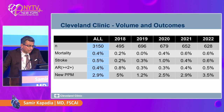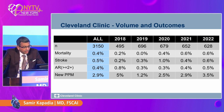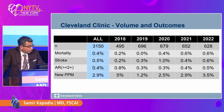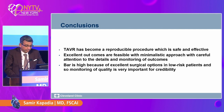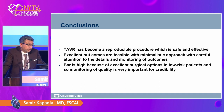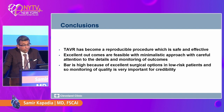These are our data for the last four years — 3,000 patients. Mortality is 0.4%, stroke is 0.5%, AR rate is 0.4%, and new pacemaker rate is 2.9%. These are all patients undergoing TAVR, including alternative access, at Cleveland Clinic. To conclude: it is a reproducible, safe, and effective procedure. Excellent outcomes are feasible with a minimalistic approach with careful attention to details and monitoring of outcomes. The bar is high because of excellent outcomes with surgery in low-risk patients, so monitoring of quality is very important for credibility.